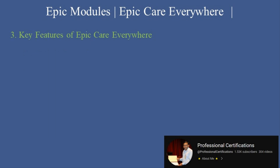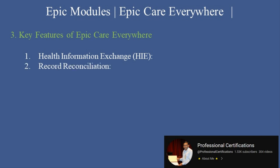Key Features of Epic Care Everywhere. Let's explore the features that make Care Everywhere essential for interoperability. First, Health Information Exchange (HIE): shares clinical data between different EHR systems, including non-Epic systems. Second, Record Reconciliation: compares external records with the local system to avoid duplicate entries. Third, Encounter History Access: provides access to a patient's visit history across multiple organizations.